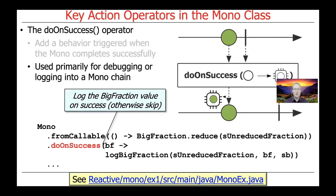This method is primarily used for debugging or for logging if you have a chain of methods that appear with monos. Here's a simple example: let's say we're going to use the fromCallable method, which is the factory method on the mono, to go ahead and create a reduced big fraction from an unreduced big fraction. Then we're going to insert the doOnSuccess action operator after fromCallable, and what that's going to do is take the big fraction and log it.